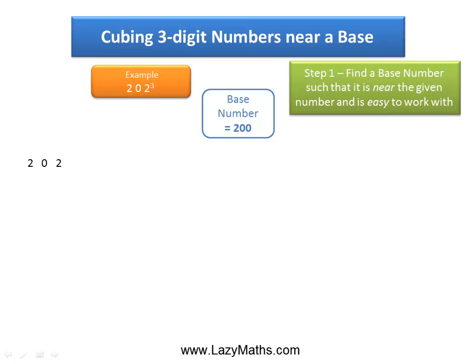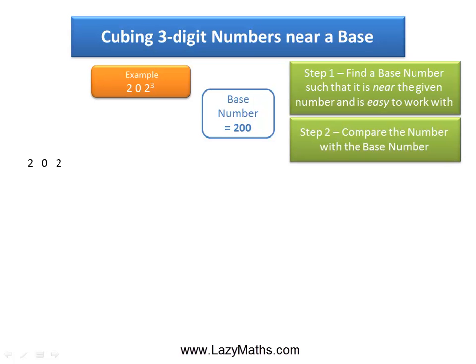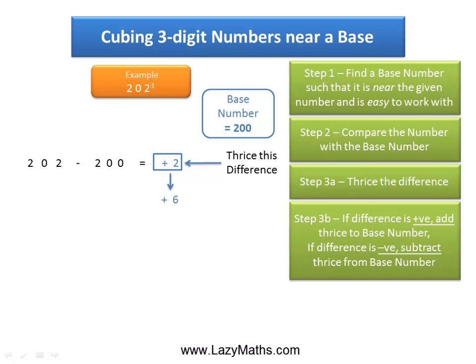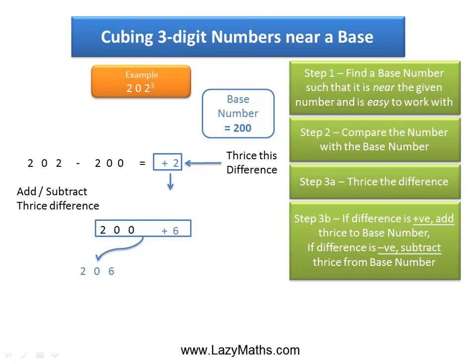The next step is to compare the base number with 202. So 202 minus 200 gives us plus 2. The next step is to trice the difference, so trice of positive 2 is positive 6. Then we add the positive 6 to the base number 200, so 200 plus 6 gives us 206.